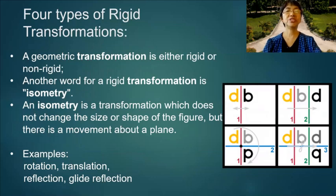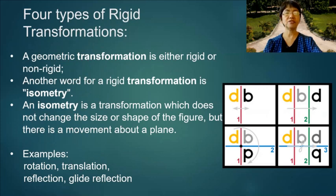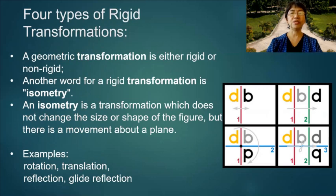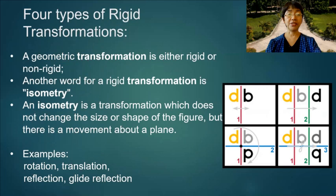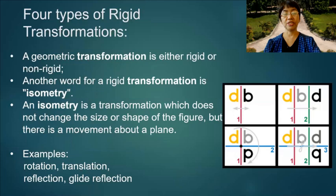Four types of rigid transformation: a geometric transformation is either rigid or non-rigid. Another word for rigid transformation is isometry. An isometry is a transformation which does not change the size or shape of the figure, but there is a movement about the plane. Examples are: rotation, translation, reflection, and glide reflection.